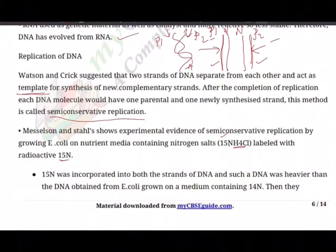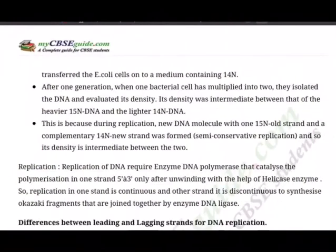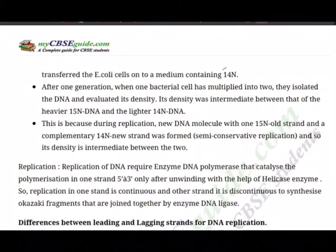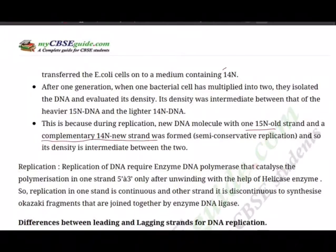They then transferred the E. coli cells onto a medium containing normal N-14 nitrogen. After one generation, when bacterial cells multiplied into two, they isolated the DNA and evaluated its density. The density was intermediate between the heavier N-15 DNA and the lighter N-14 DNA, because one strand was N-15 and the complementary new strand was N-14. This proved semi-conservative replication of DNA beyond doubt.